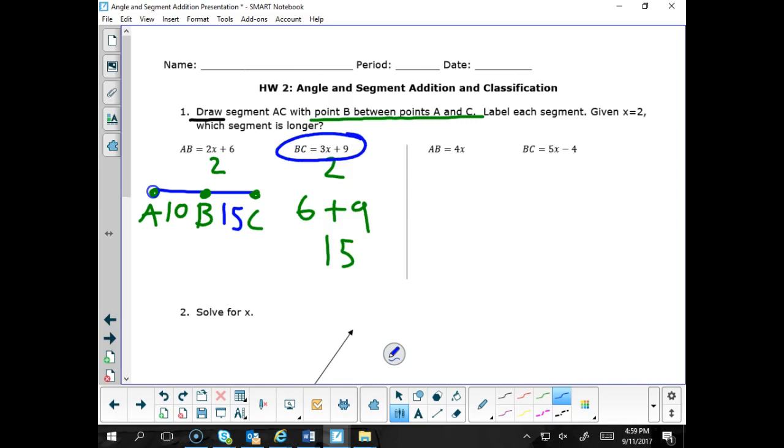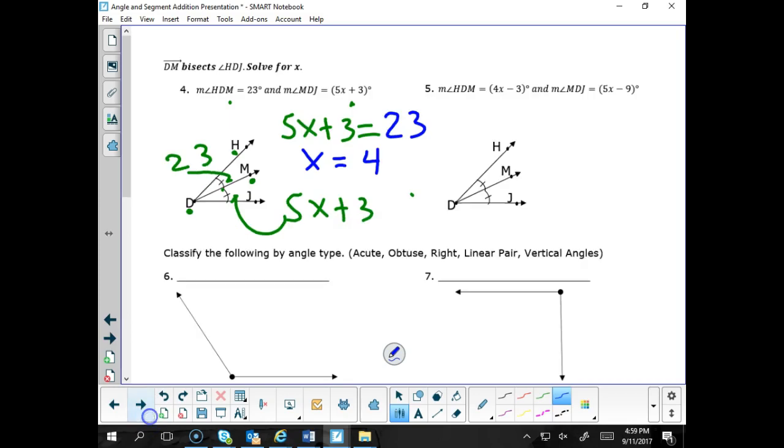Let's turn over to the back of the worksheet and look at number four together. Number four, it says DM bisects angle HDJ. Solve for x. Well, we know that the word bisects means it divides an angle into two equal parts. So if we know that HDM, this little angle right here is 23 degrees. Let's draw an arrow pointing.